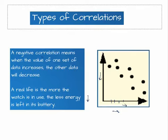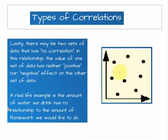The next diagram: when there is no data that can be analyzed as positive correlation or negative correlation. There may be two sets of data that have no correlation in the relationship. The value of one set of data has neither positive nor negative effect on the other set. No data is dependent on other data. A real life example is the amount of water we drink has no relationship with the amount of homework we would like to do. So these two variables have no relation, so it is called no correlation and the graph is plotted like this.